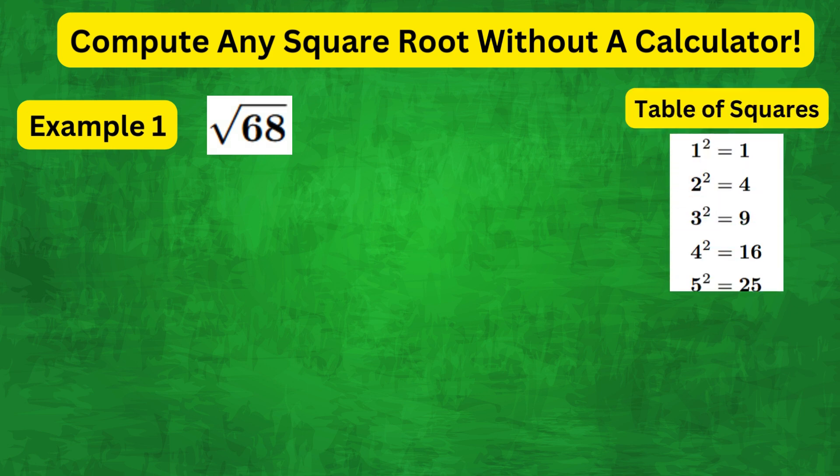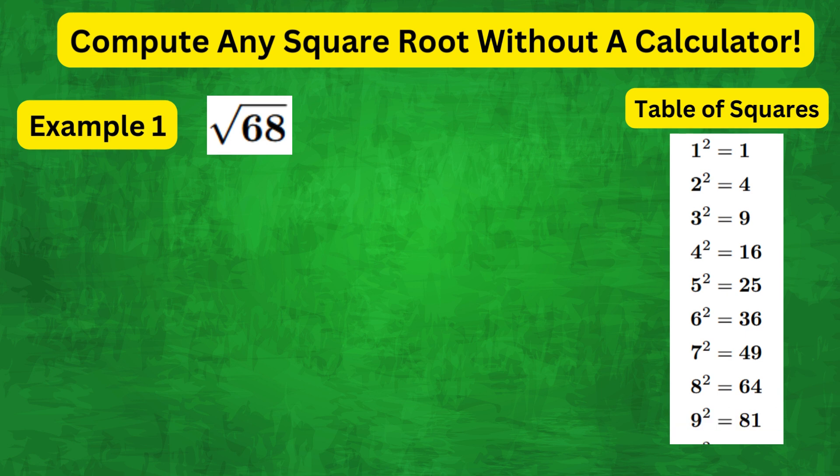Now, for this method, we will rely upon the table of squares of whole numbers given here. Notice that the square number closest to 68 is 64, which is 8 squared.